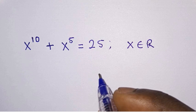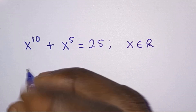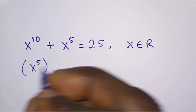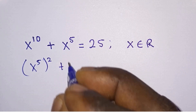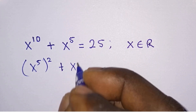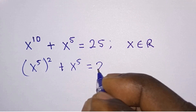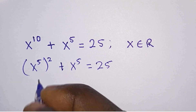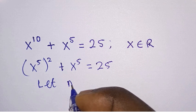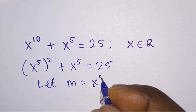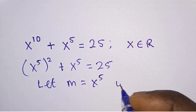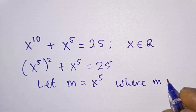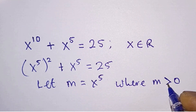Now let's get started. First, we will write x to the power 10 as x to the power 5, all to the power 2, plus x to the power 5 is equal to 25. Then we will let m equal to x to the power 5, where m is greater than 0.